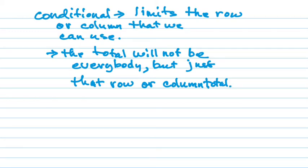So when we have conditional, it limits the row or column that we can use. So the total will not be everybody, but just that row or column. Remember that when the others, we were always able to use that big grand total as the total out of everybody. But this time, we're going to be limited. The chart is columns up and down, rows across. So it's going to change the total that we can use.